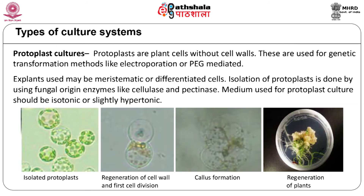Some plant transformation techniques like electroporation or PEG-mediated transformation require cells without cell walls. This is possible by isolating protoplasts from plant tissues by treating them with cellulases and pectinases. These enzymes remove the cell walls and leave intact protoplasts which can be cultured on an isotonic nutrient medium. The protoplasts regenerate a cell wall within 24–48 hours and undergo divisions to form callus, which can then be used for obtaining plants. The advantage of this technique is that each callus mass is formed from single protoplasts, making it easier to identify transformed calli on selection medium.